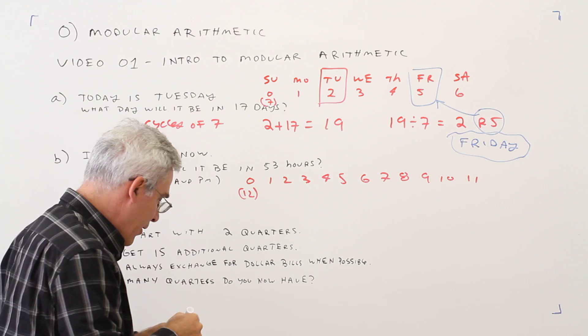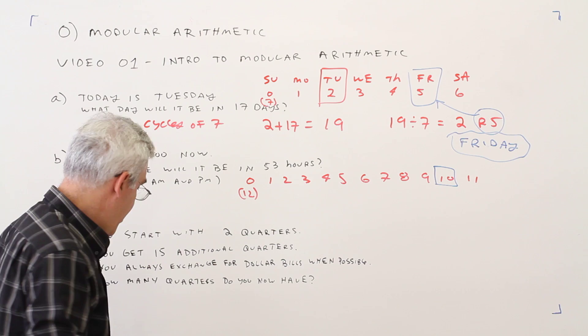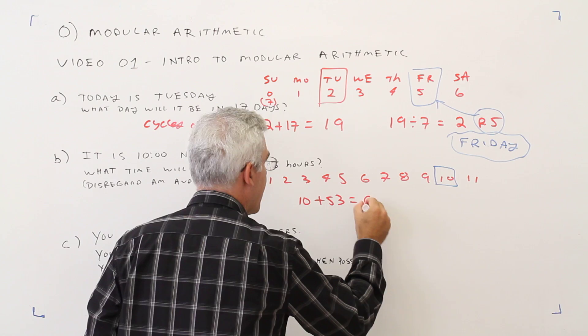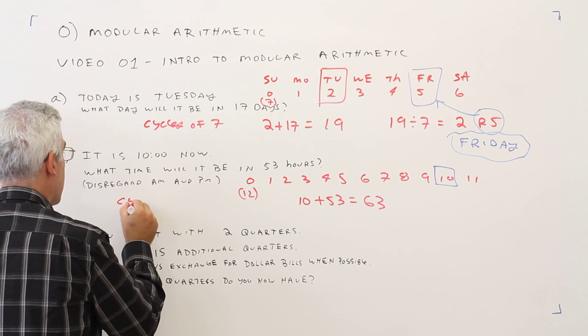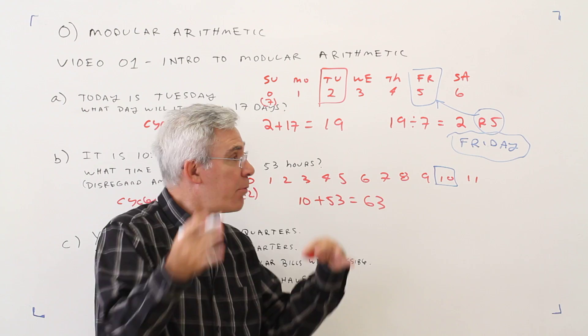Okay, so it's 10 o'clock now. And we're going to add 53 hours. So it's going to be 10 plus 53 is 63. So obviously there's no time 63. We're in cycles of 12. So we'll divide by 12 and the remainder will specify exactly what the hour is.